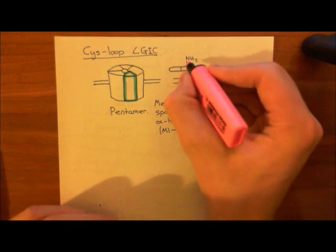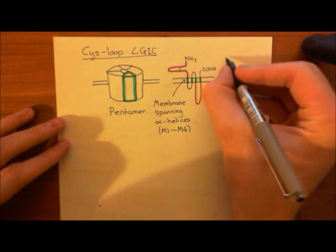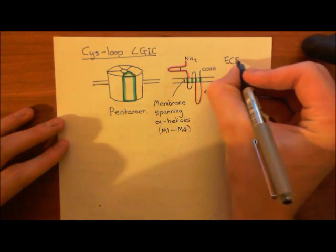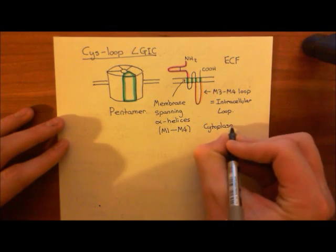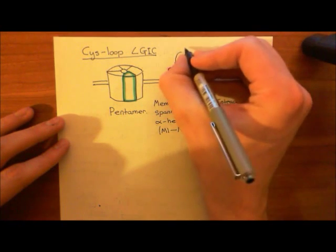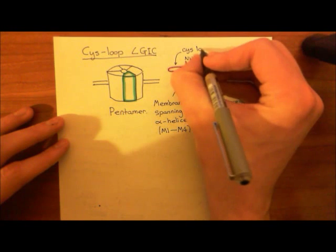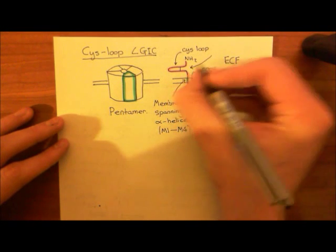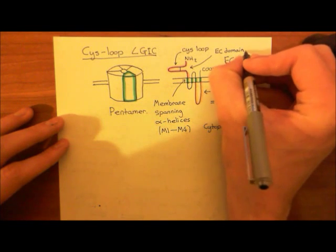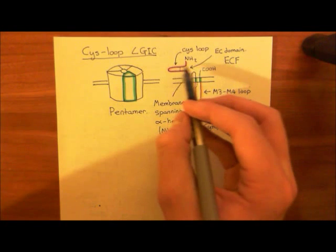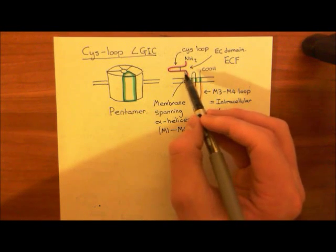In pink we have the extracellular domain — the portion on the extracellular face. This is the extracellular fluid (ECF), and below the membrane is the cytoplasm. Although my picture is dominated by the cys-loop, the extracellular domain is much bigger than just the cys-loop. There's much more to the extracellular domain than drawn here, but I've emphasised the cys-loop so that the name 'cys-loop ligand-gated ion channel' now makes sense.